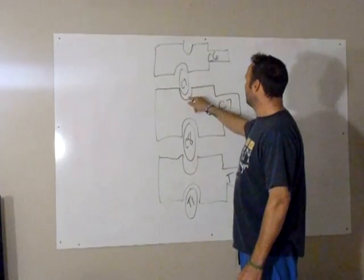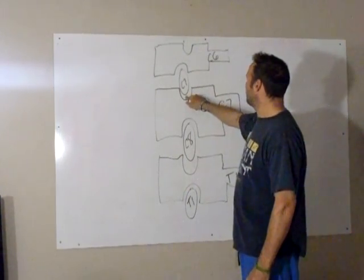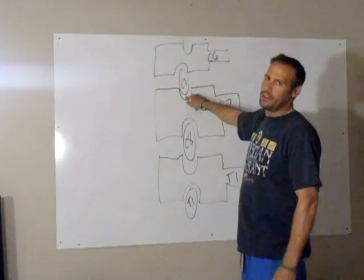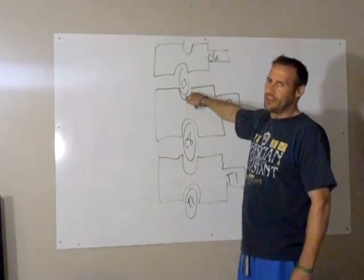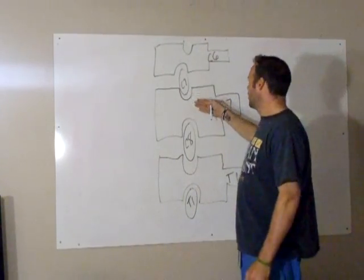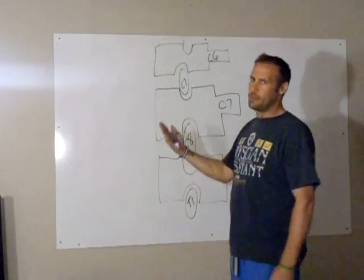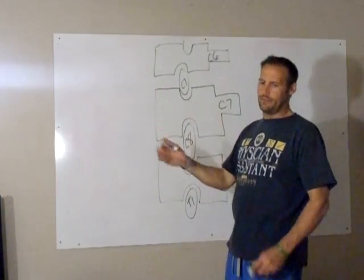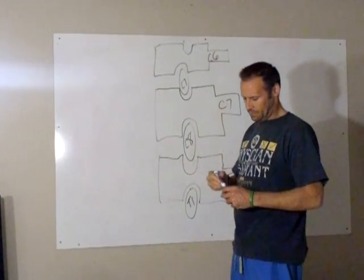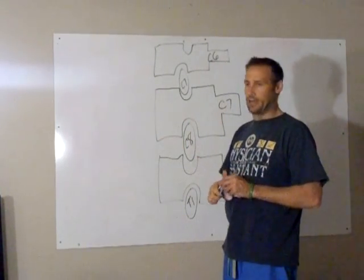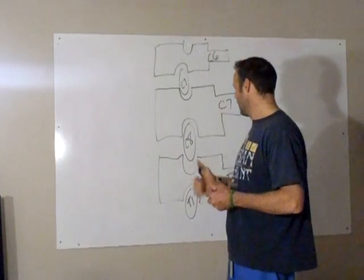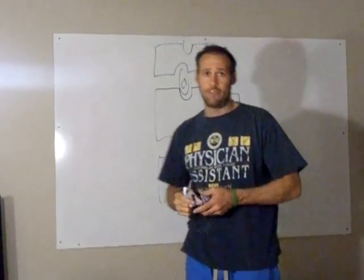If it's the superior pedicle of C7, then that would be C7. Just draw out your structures first, then go back to the question and find out the information they're asking, and you'll have no problem answering it.